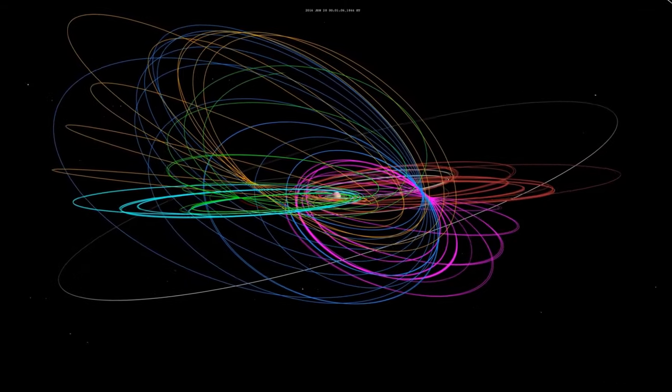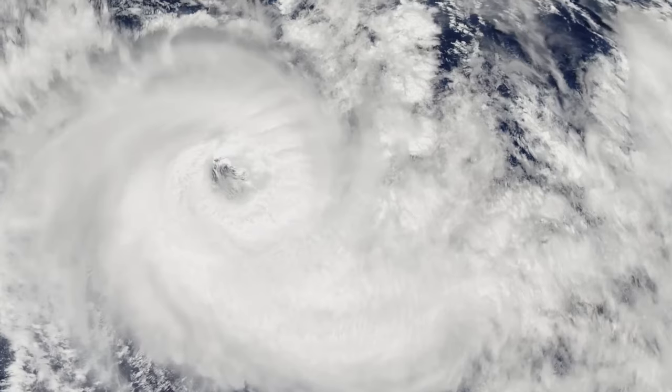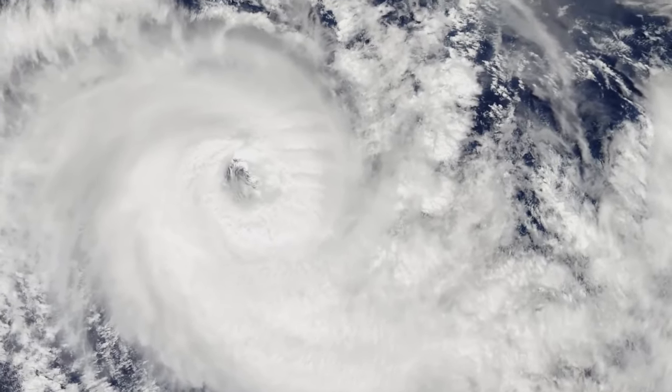Now, before we get too carried away with the idea of life on Titan, let's consider the harsh reality of this moon. It's incredibly cold, with temperatures plummeting to about minus 290 degrees Fahrenheit.